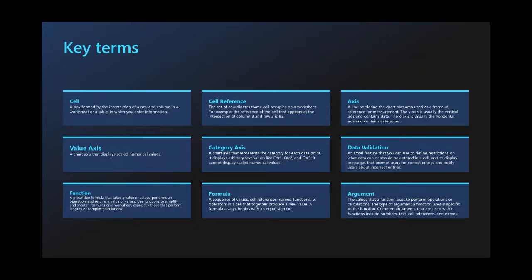The very first thing we should go over, especially for those brand new to Excel, is terminology. We'll go over this quick sheet on basic terms. The very first is the cell — if you've ever looked at an Excel worksheet, you'll see it has a whole grid of boxes, and each one of those boxes is called a cell. Every cell has a set of coordinates using two different axes — columns and rows — one is alphabetical and the other numeric. A combination of the two gives you the exact location of a specific cell on the sheet.